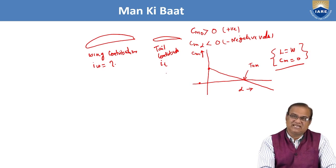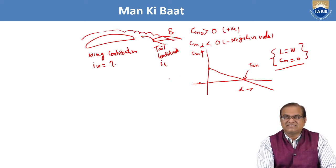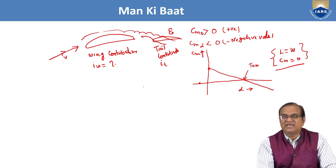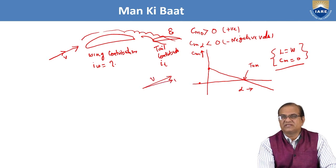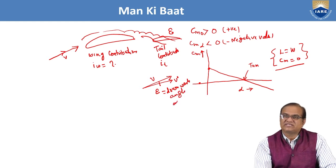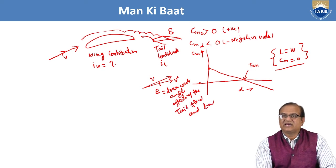We also saw that at the tail there is a downwash from the wing. Due to wing vortices there is an angle called epsilon — the downwash angle. This downwash angle affects the tail flow and the tail lift coefficient.